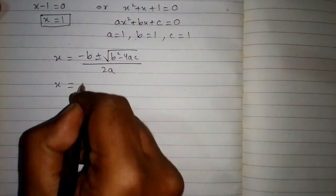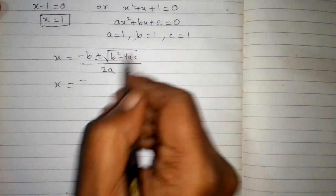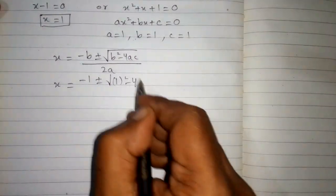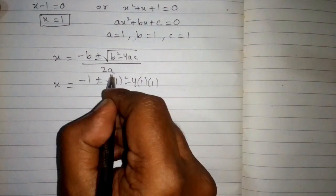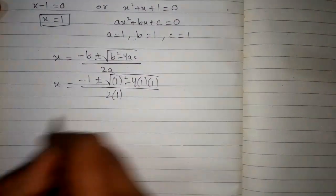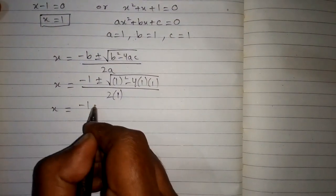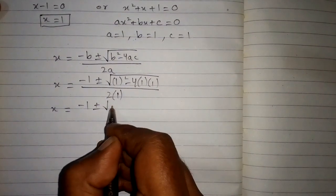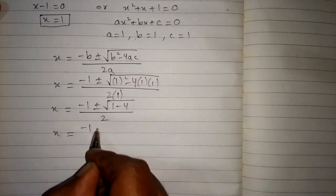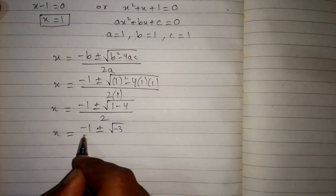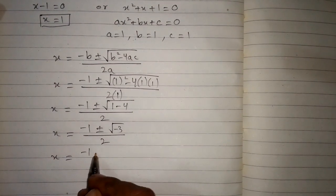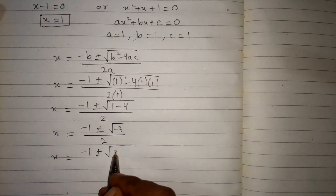So we have x equal to minus 1, then 1 squared minus 4 times 1 times 1, in the denominator 2 times 1. This gives minus 1 plus or minus the square root of 1 minus 4, which is minus 1 plus or minus the square root of minus 3, upon 2.